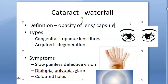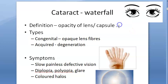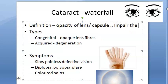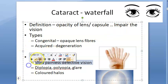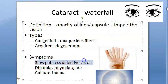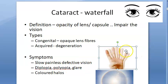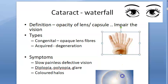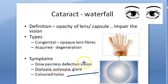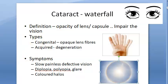A slight addition to the definition: opacity of lens or capsule sufficient enough to impair the vision. The symptoms of these patients include slow, painless, defective vision. They will be losing vision gradually without knowing it. They can also have diplopia, polyopia, glare, and colored halos.